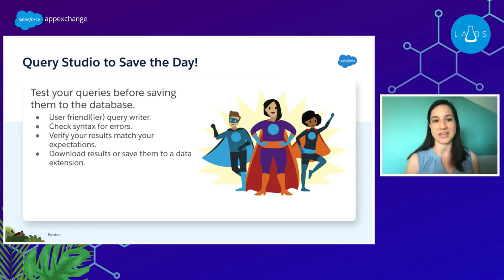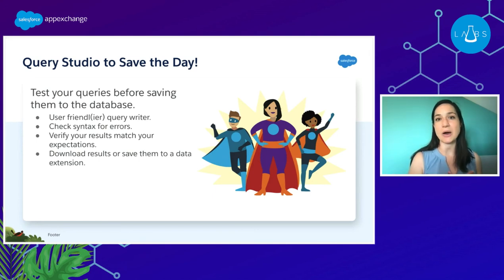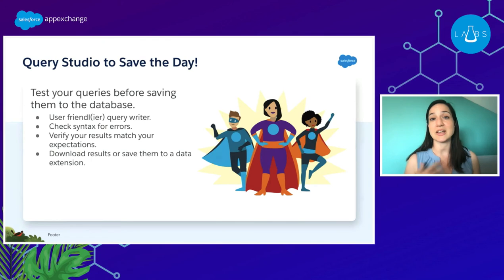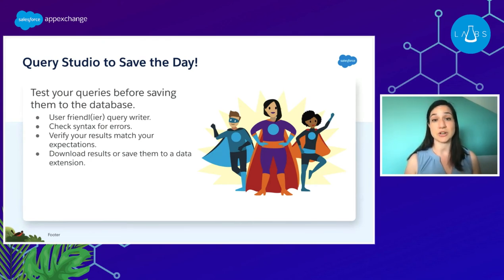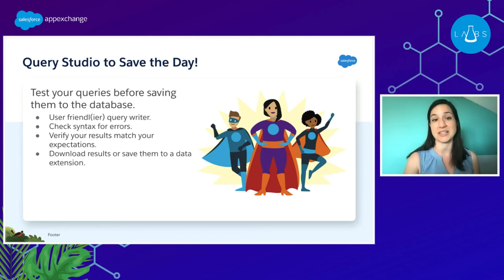You can check your syntax for errors and make sure everything's written correctly. Verify your results match your expectations — because how many times have you written a query and gotten the syntax correct with no errors, but then you look at your target data extension and there are no results? We want to be able to catch those errors before they happen. And then you can download the results or save them to a data extension.